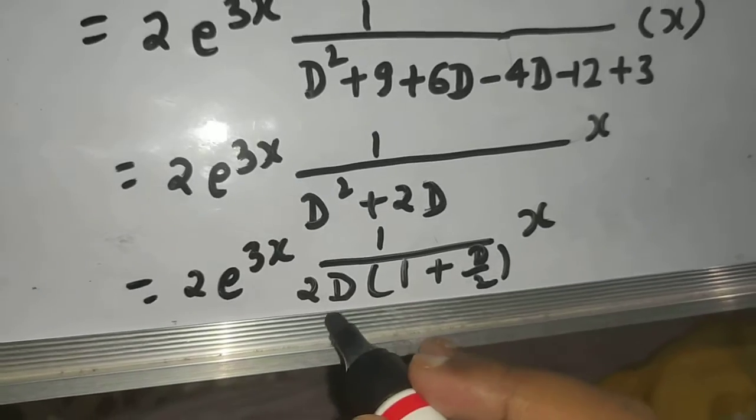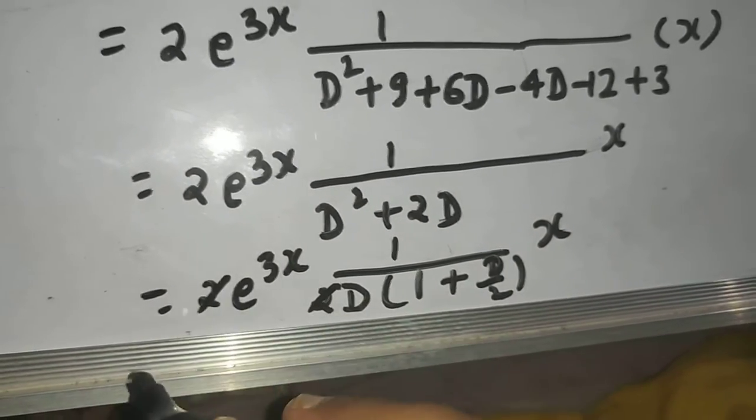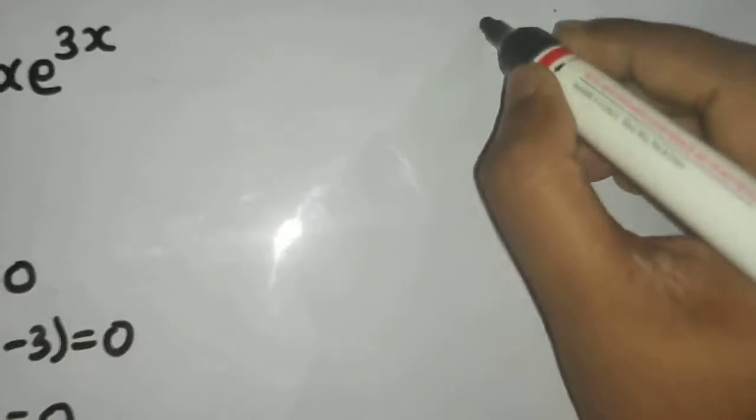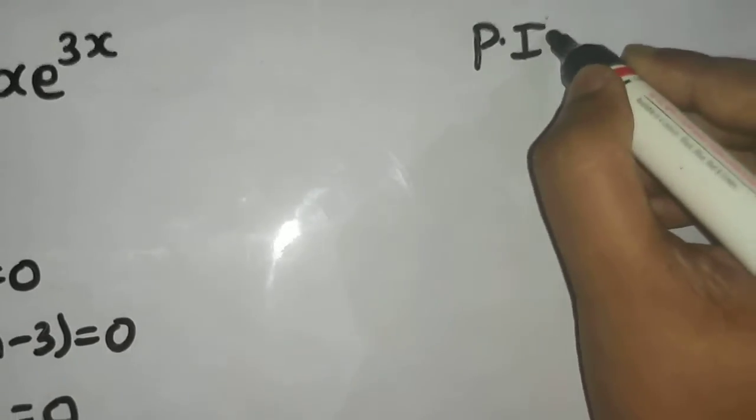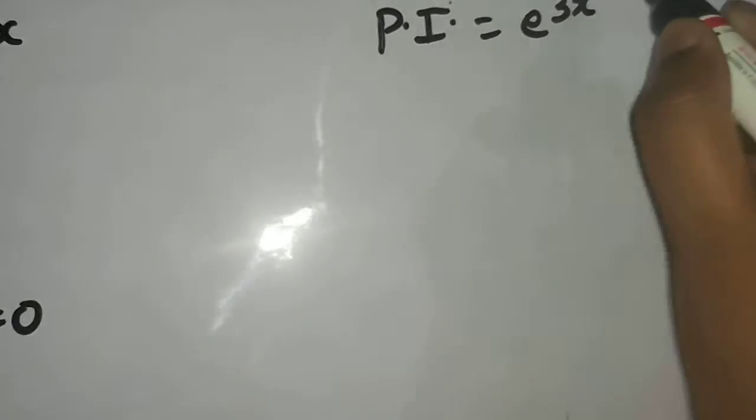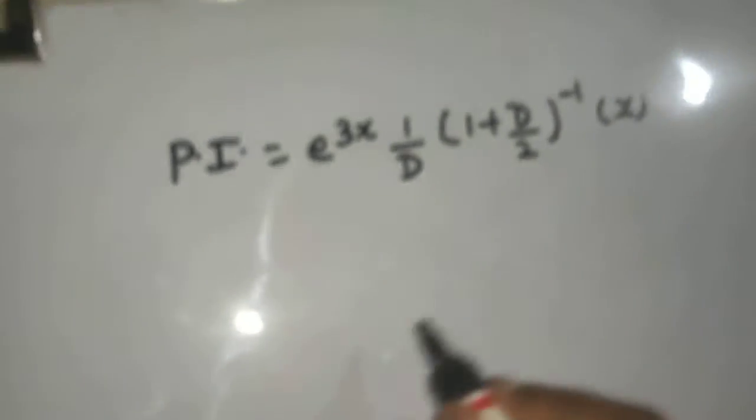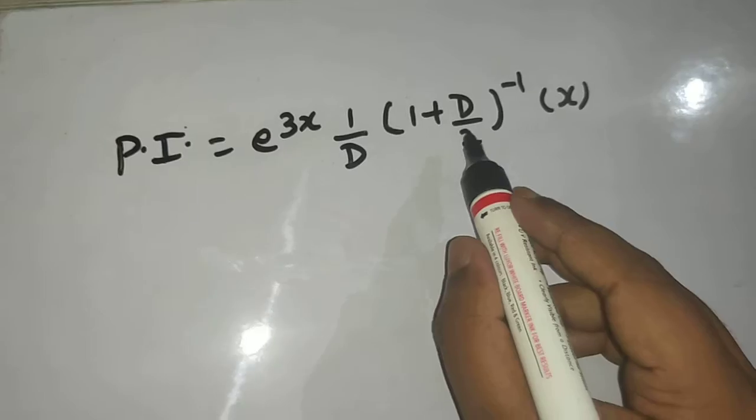Okay, now this 2 can easily be cancelled, and I will be getting my particular integral now as e power 3x, and this I can write as 1 upon d, and the remaining I can take up. So 1 plus d by 2 power minus 1, operating on x.